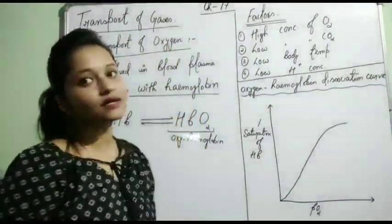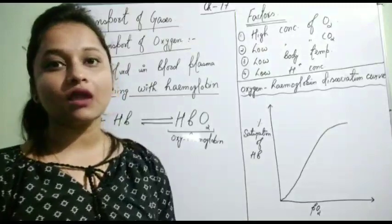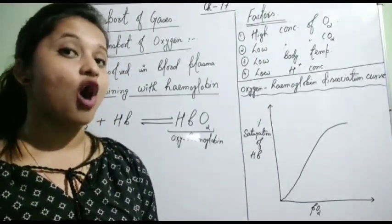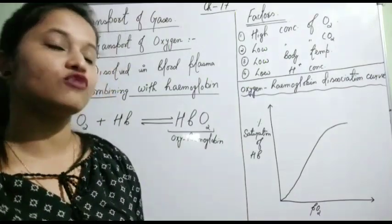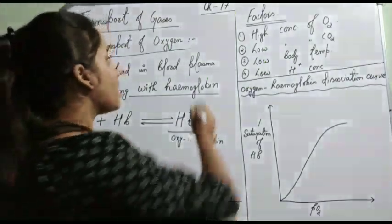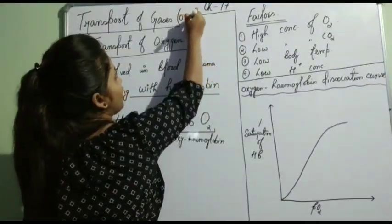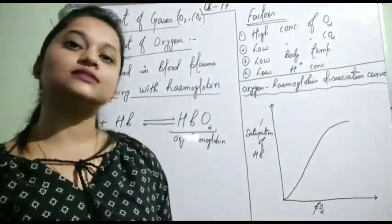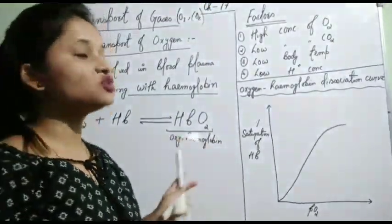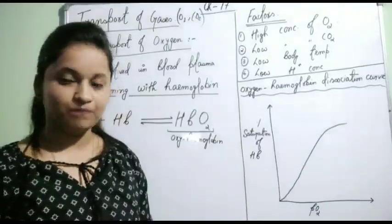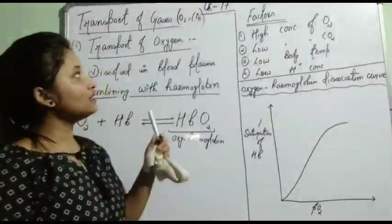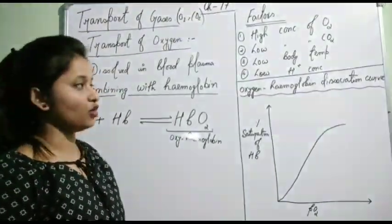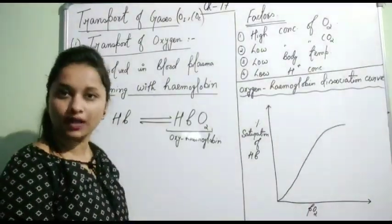Which gases are we talking about? We have learned the exchange of gases — which gases? Oxygen and carbon dioxide. So we will learn the transport of oxygen and carbon dioxide — how oxygen and carbon dioxide are being transported in our body. First of all, we will see oxygen: how oxygen is transported in our body.